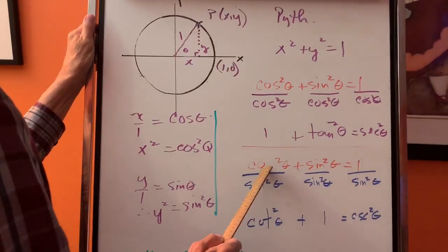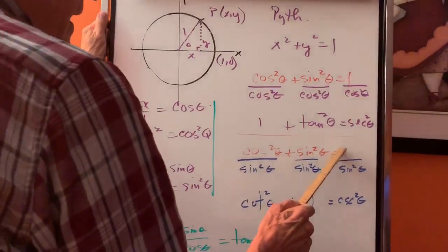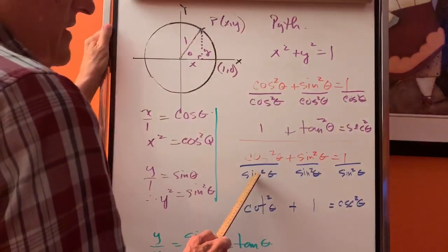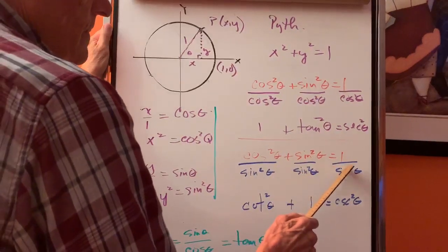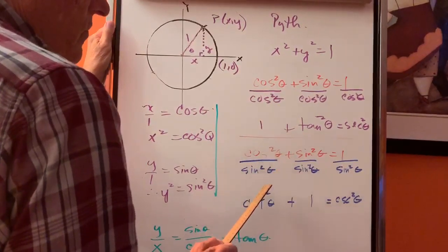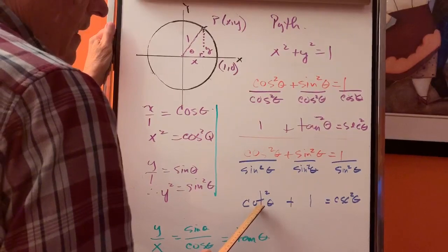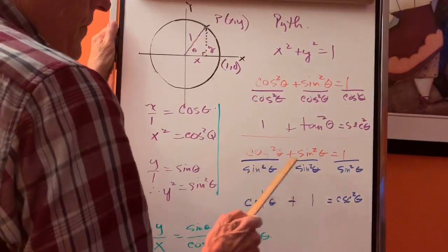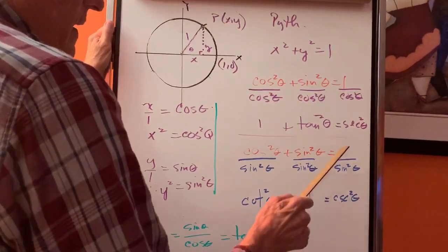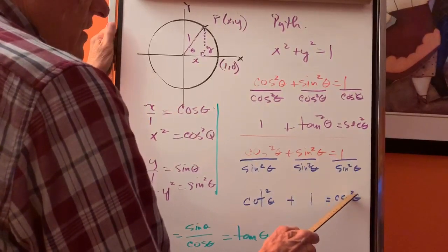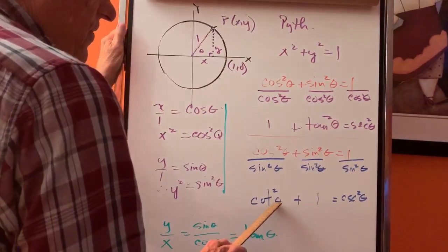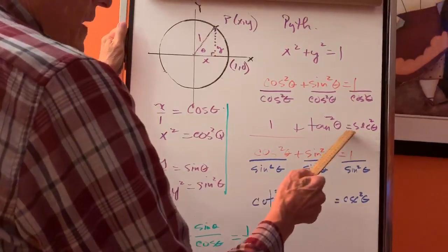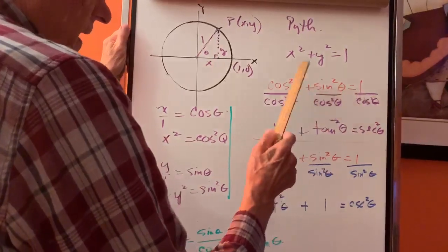Let's take cos squared plus sine squared equals one again. This time divide by sine squared. Cos squared over sine squared equals cotangent squared with the flip of sine over cos, and this equals one, and one over sine is cosecant squared. We have another Pythagorean identity - we have this one and we have this one.